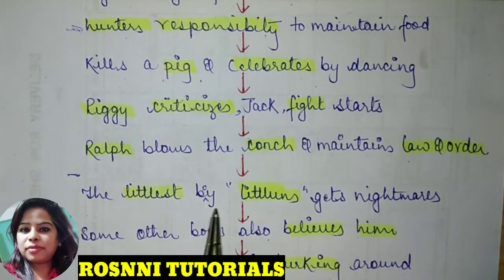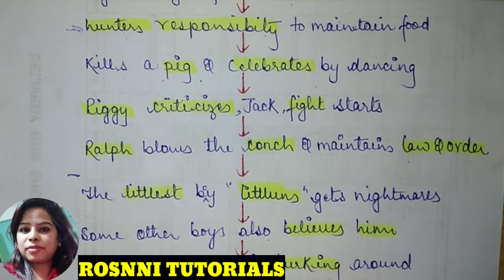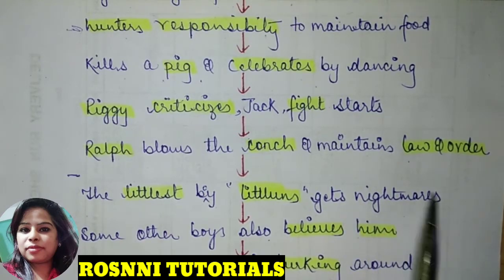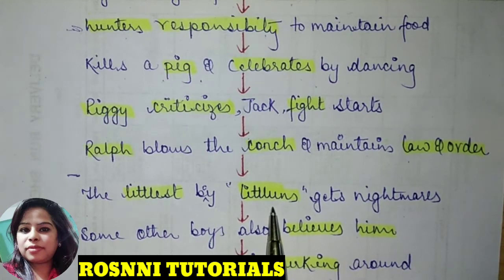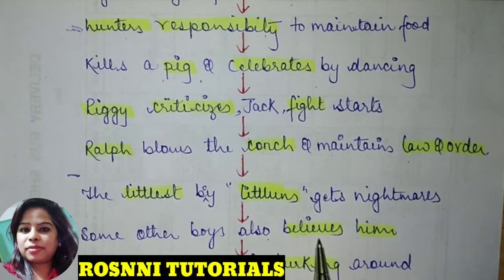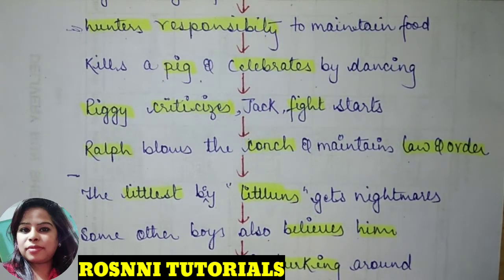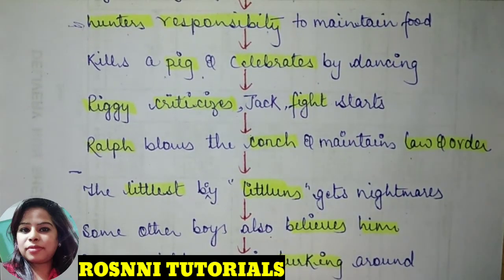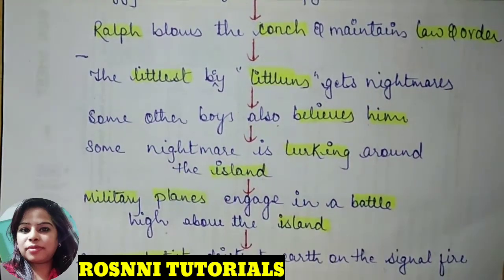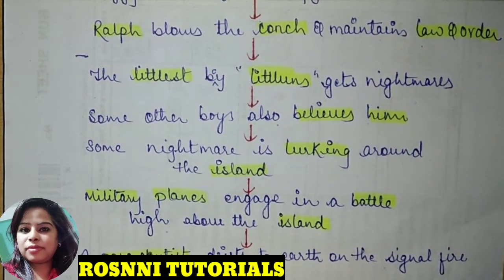One of the littlest boys had a nightmare about a monster on the island, and some other boys in the group also believed there was a monster. The nightmare spread fear — a monster was believed to be lurking around the island and coming towards the boys, who were terrified.